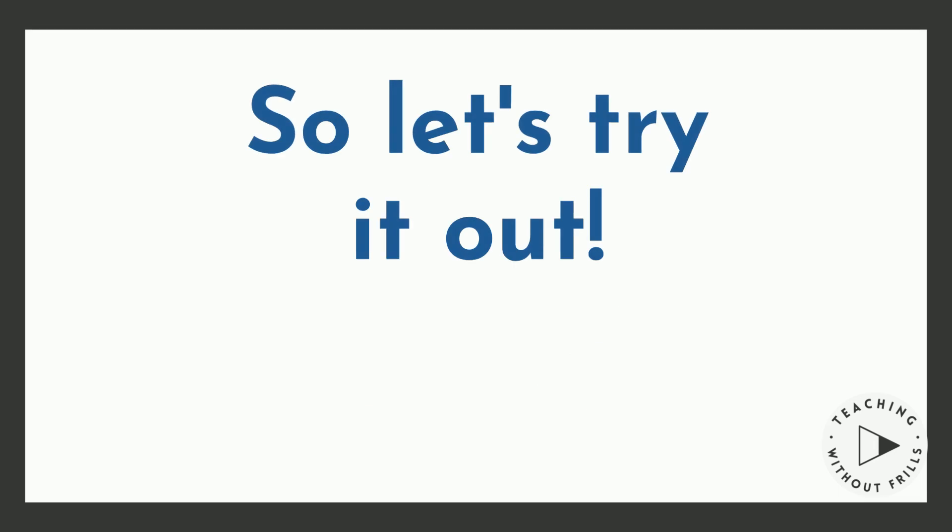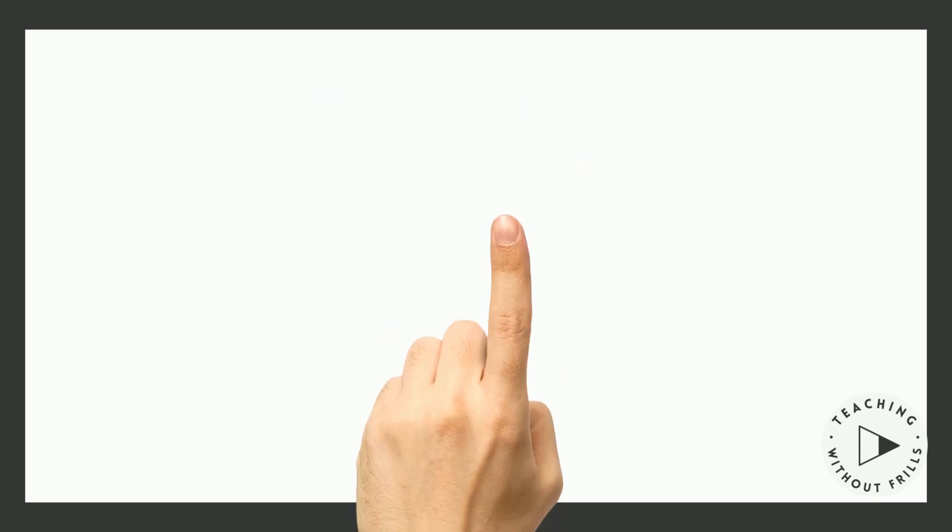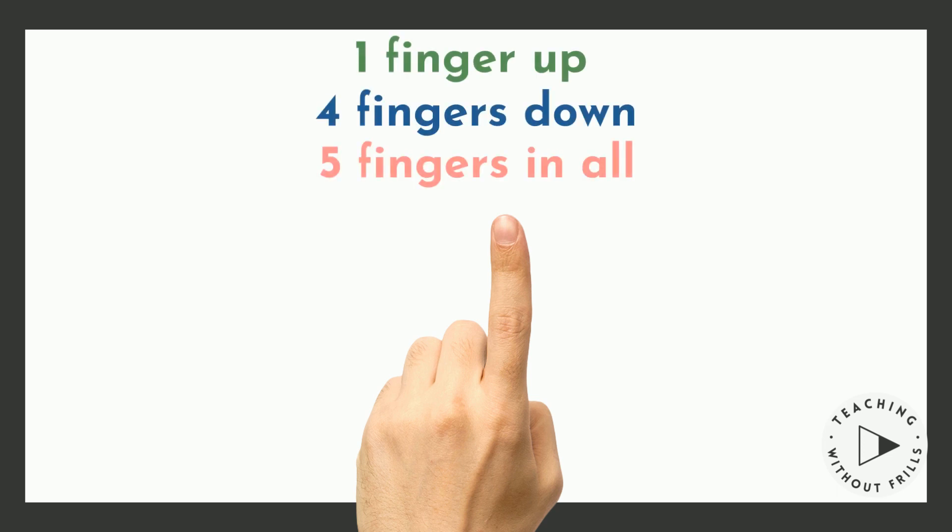So let's try it out. You follow along with your own hand as we go. Zero fingers up and five fingers down is five fingers in all. One finger up and four fingers down is five fingers in all.